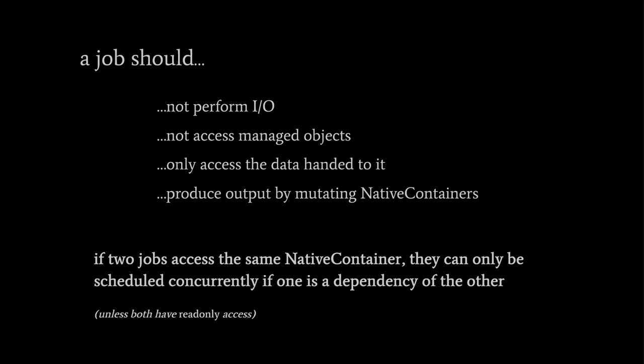Which job should be a dependency of the other is up to us, but we don't want to leave their order of execution up to the happenstance of scheduling. Very helpfully, the job system safety checks will give us an error if we try to schedule conflicting jobs with no dependency between them. However, these checks are fairly costly, and so they are enabled only within the editor, not within standalone builds.